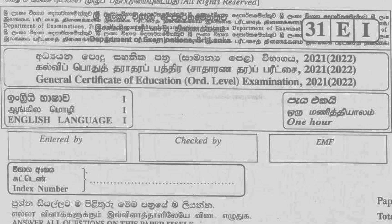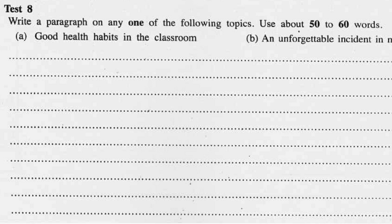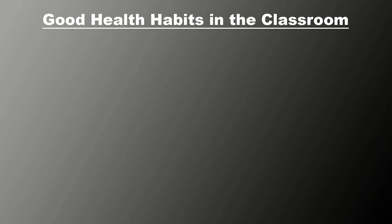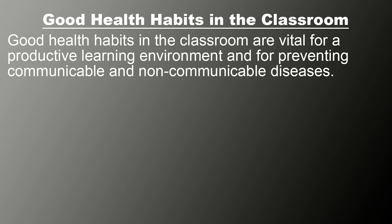GCEO Level 2021-2022 Test 8: Write a paragraph on any one of the following topics. Use about 50 to 60 words. The first topic is 'Good health habits in the classroom.' The first sentence: Good health habits in the classroom...